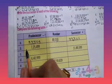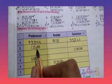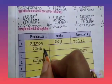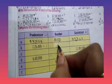Now part B: the number is 7,25,499. We minus 1 to get the predecessor, and we add 1 to get the successor. So successor becomes 7,25,500.